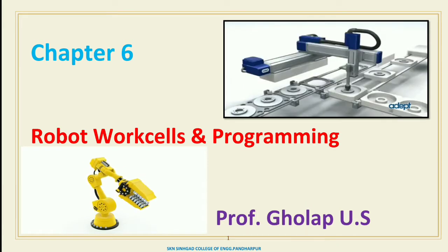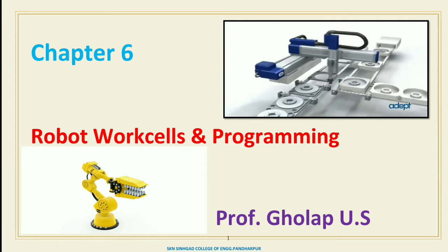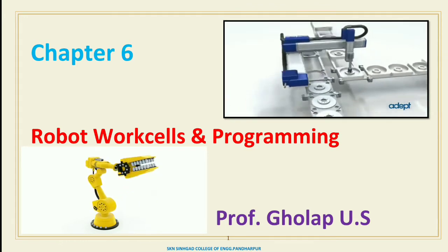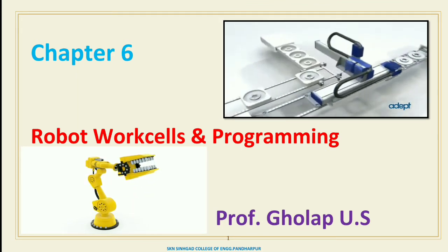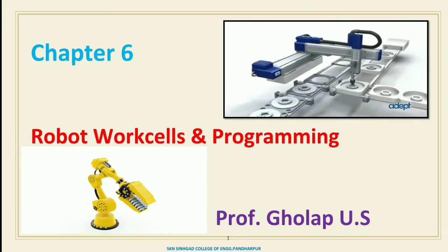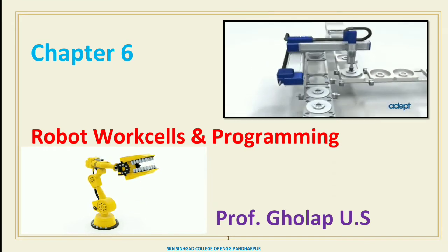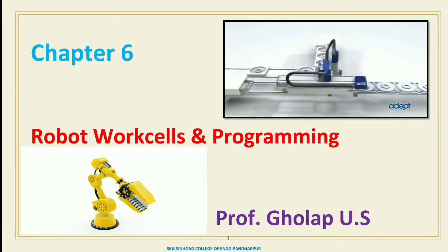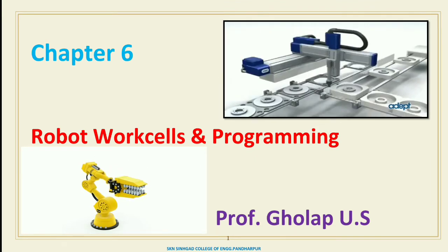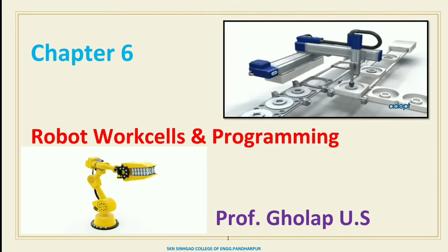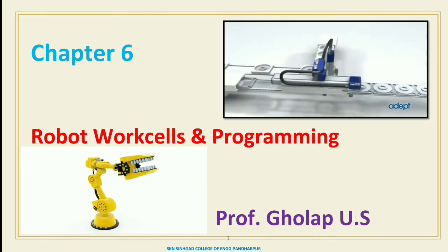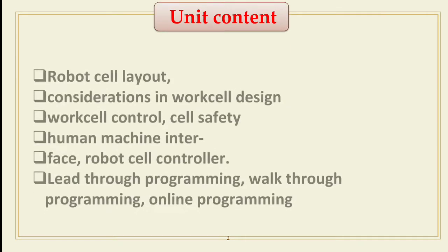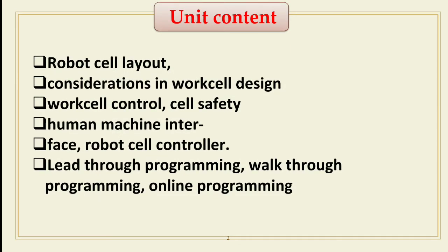In this chapter number six we will discuss the robot work cell layout, considerations in robot work cell design, work cell control, cell safety, machine or human interface, robot cell controller, lead-through programming, and walk-through programming. These are the different unit contents of chapter six.